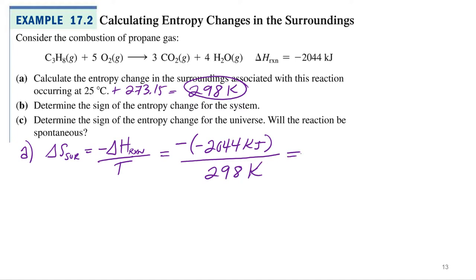And what do we get? If we take negative of a negative 2044 and divide it by 298. 6.86. Oh, 6.86, sorry. 6.86. That's positive, right? And that's kilojoules per Kelvin. Yeah, okay, so yep. No, that's kilojoules and Kelvin on the bottom. All right, so that's the actual entropy change for the surroundings.